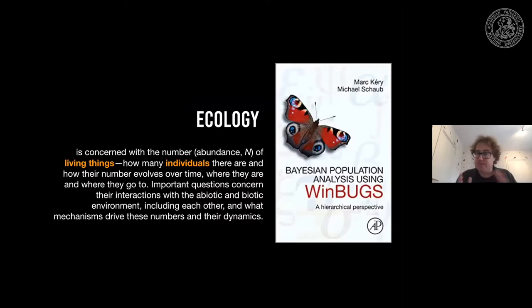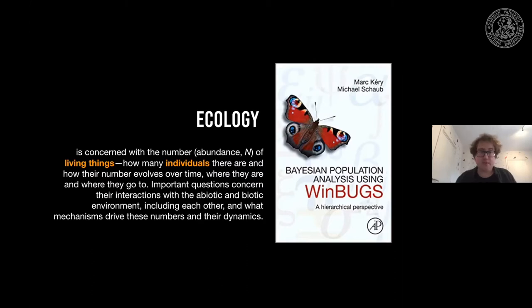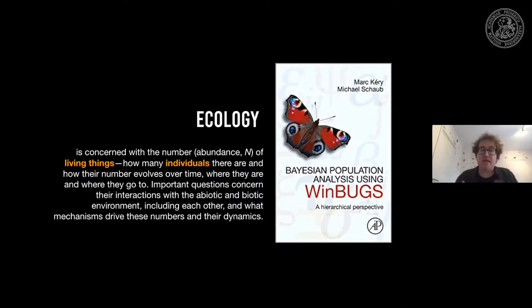I want to say a few things on this curious mix of historic literature and ecology. From a statistical textbook by Kiri Ann Schraub, ecology is defined as concerned with the number or abundance of living things: how many individuals are there, how did their number evolve over time, where were they and where do they go? Important questions concern the interaction of these living things with abiotic factors and biotic aspects of the environment, such as other animals. Ecologists study interactions between individuals and the mechanisms that drive and explain their numbers, their dynamics.